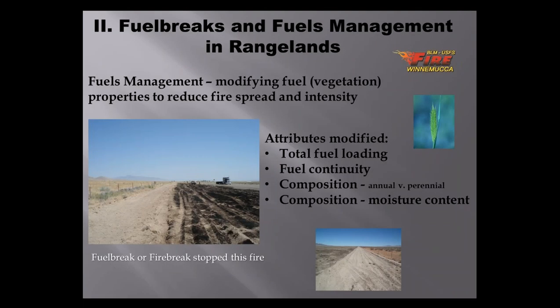Fuels management in rangelands is constrained to modifying fuel properties to reduce fire spread and intensity — modifying attributes like fuel loading, fuel continuity, and in many cases composition, trying to remove annuals and introduce perennials. The goal is to either slow down or stop advancing wildfires, or reduce the intensity to allow suppression resources a safe place for fire suppression.